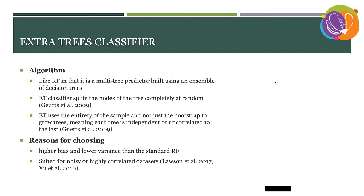We also explored the Extra Trees classifier. Like random forest, it's a multi-tree predictor built using an ensemble of decision trees, but it splits nodes completely at random and uses the entirety of the sample rather than a bootstrap to grow trees. This means each tree is independent and uncorrelated. It has higher bias and lower variance than standard random forest and is suited for noisier, highly correlated datasets — which was an important consideration given the spatial resolution of our data.